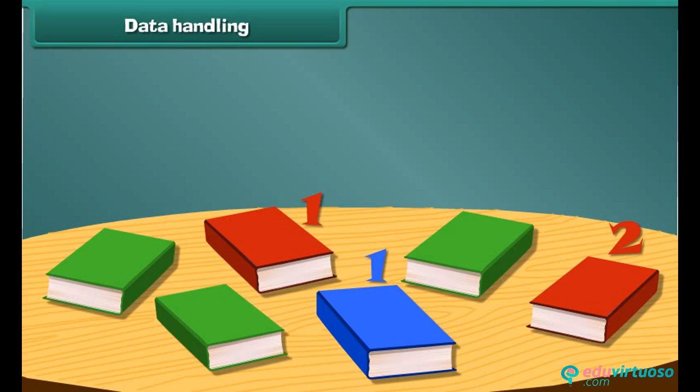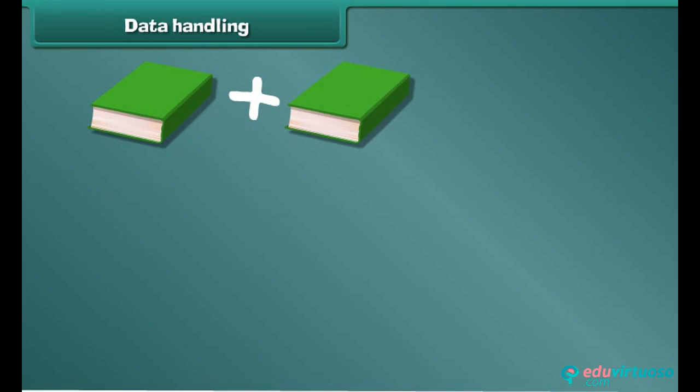How many green colored books do you see? 1, 2, 3. There are 3 green colored books.